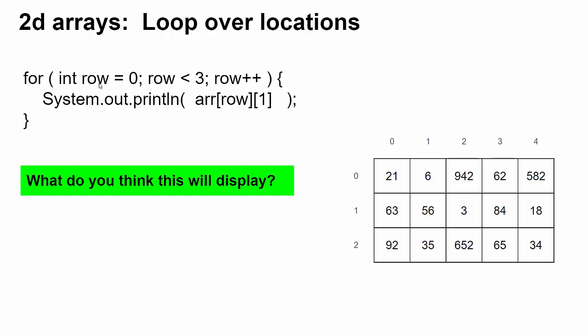I've got a variable called row that starts at zero, goes up by one every time and keeps going as long as it's smaller than three. And then I'm going to print what's in my array at whatever location number is in this variable and one. Tell me, what do you think it's going to display?